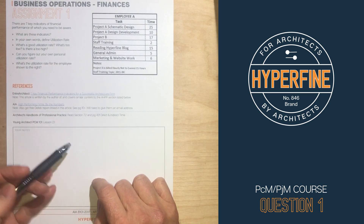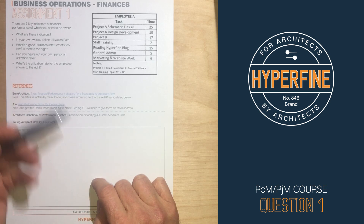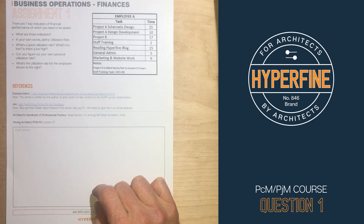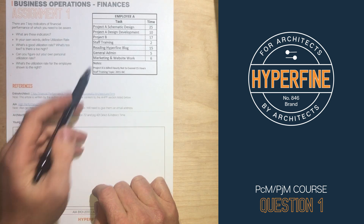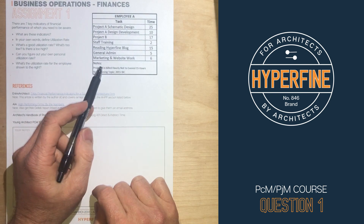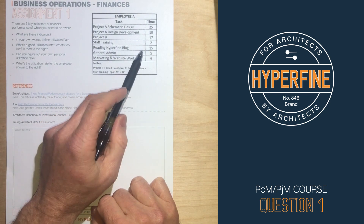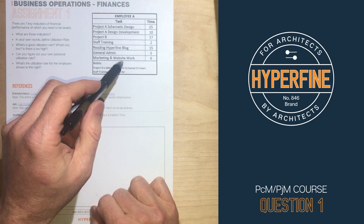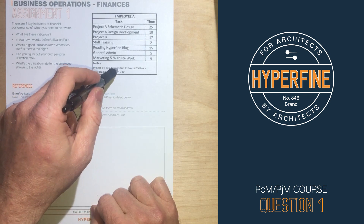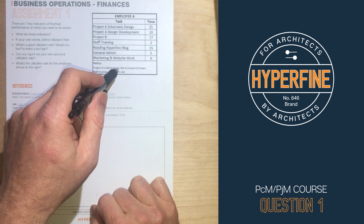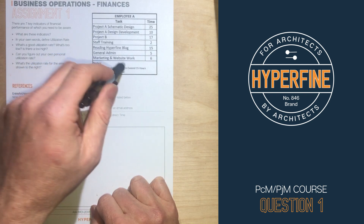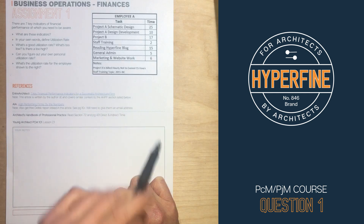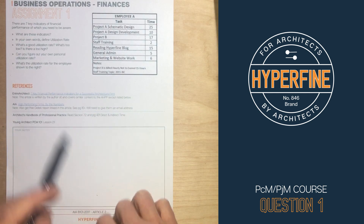What's a good utilization rate? What's too low? Is there a too high? Can you figure out your own personal utilization rate? And then what's the utilization rate of the employee shown at the right? I'm going to go over this example, an example from the Walking the ARE 5.0 practice exam, and the example shown in the NCARB ARE 5.0 handbook.